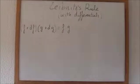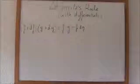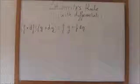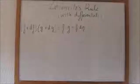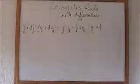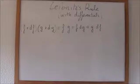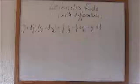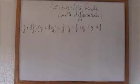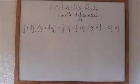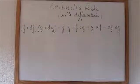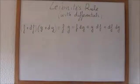F times G plus F times differential of G plus differential of F times G. We put it the other way around, but it's the same, they commute. Plus differential of F times differential of G.